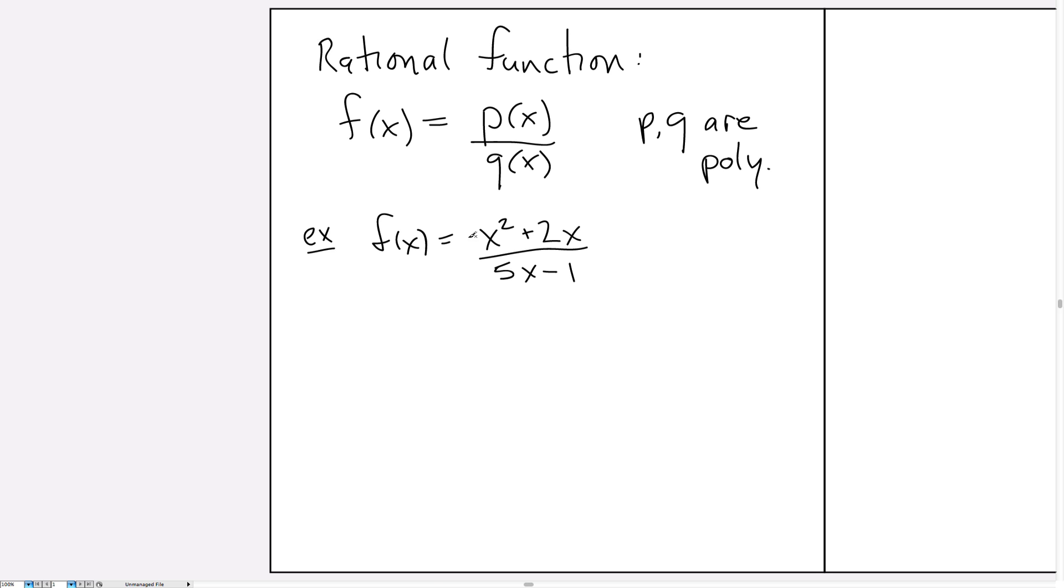How do we approximate the behavior of this function near the origin? We know that p(x) can be approximated using asymptotics. When x is very small, let's say 0.01, we plug that in and get 0.01 squared plus 2 times 0.01. When we multiply this out we get a very small number here and a somewhat small number here.